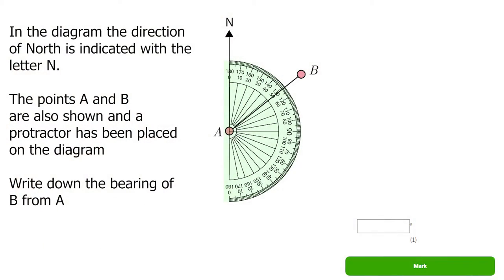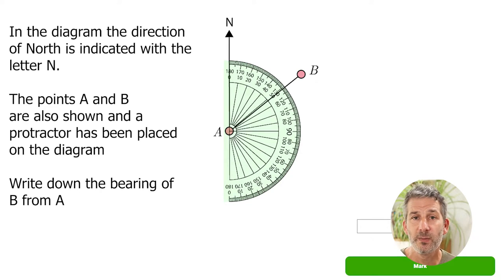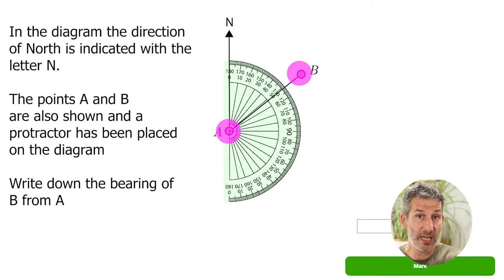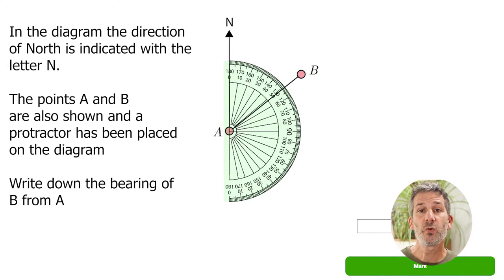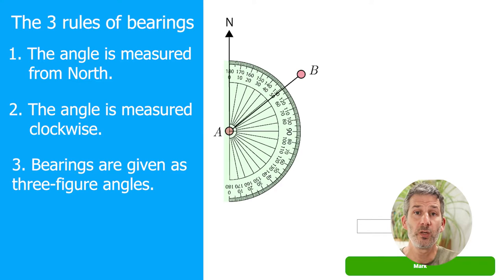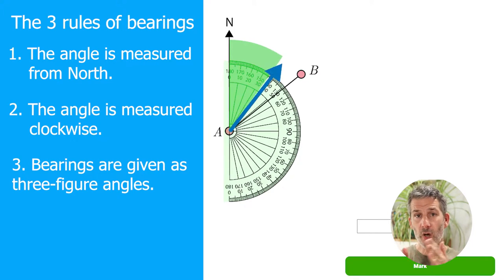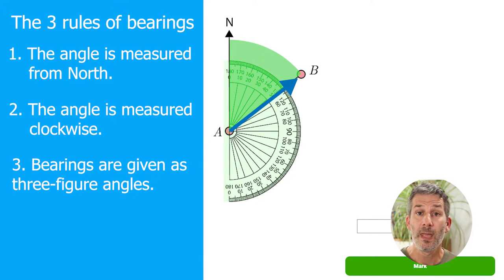In the diagram below, the direction of north is indicated with the letter N. The points A and B are also shown and a protractor has been placed on the diagram. Write down the bearing of B from A. This question asks us to find the bearing of B from A, so we imagine we're traveling from point A to point B and we need to know what direction that is. The rules tell us we must always measure the angle from north, so I find it helpful to imagine I'm standing at point A facing north, then turning clockwise until I'm facing point B. The angle I've had to turn through is the bearing from A to B.